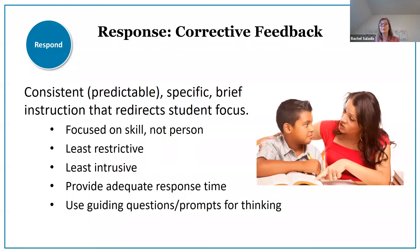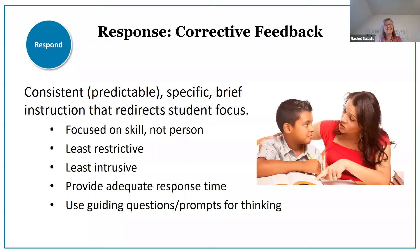Another effective strategy when responding to behavioral error is corrective feedback. It should be consistent and predictable, very specific — brief instruction in the moment around what the behavioral error was, followed by brief instruction that redirects the student's focus. The response should be focused on the skill and not a judgment of the person. Feedback should be given in the least restrictive environment, in a private, quiet, and respectful manner. After giving corrective feedback, move away, give the student time to think, and then check back in after giving adequate response time.